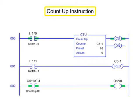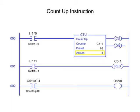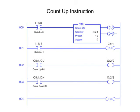Count-up and Count-down instructions are used to count rung transitions. The Count-up instruction, or CTU, is used to count false to true rung transitions. When rung conditions for a CTU instruction have made a false to true transition, the Count-up Enable bit is energized, and the accumulated value is incremented by one count.